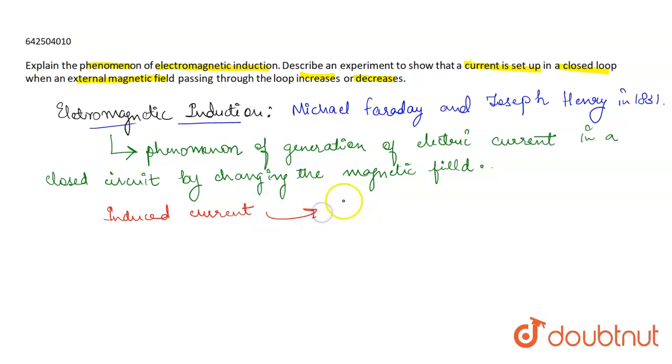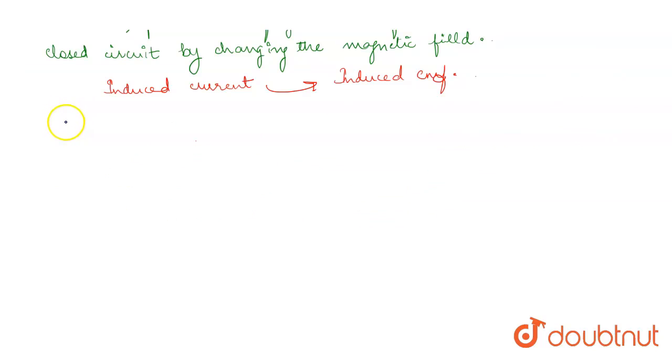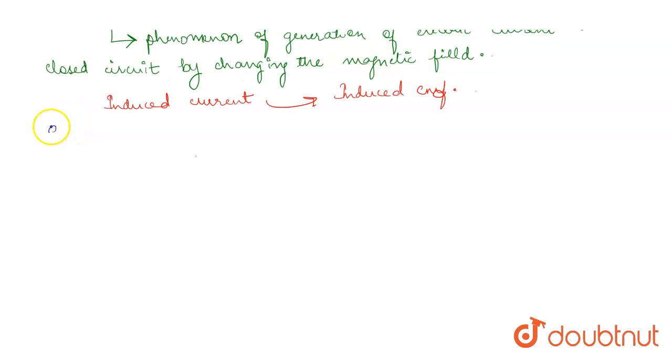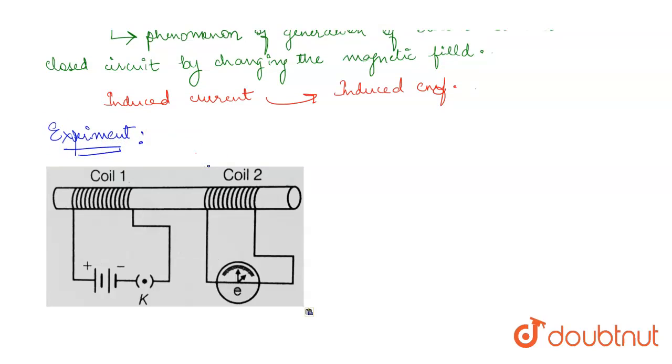Now let us understand the experiment. The setup is we have two different coils of copper wire having large number of turns. Coil one has around 100 turns and coil two has 50 turns.